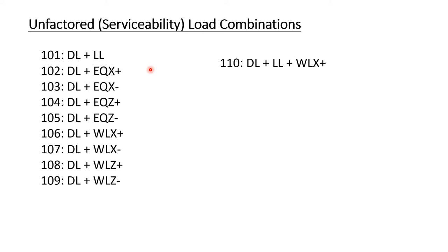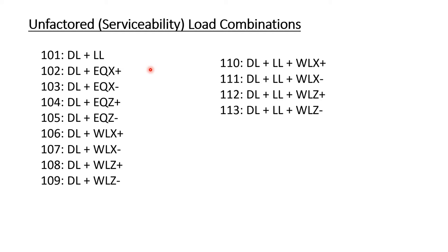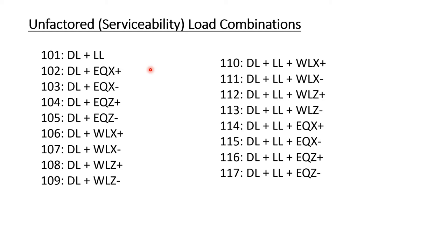The next load combination is dead load plus live load plus wind load in positive x direction. Similarly, dead and live loads with wind loads in negative x, positive z, and negative z directions. Then dead load plus live load plus earthquake load in positive x, negative x, positive z, and negative z directions. These are the 17 unfactored load combinations we will add to our structure.